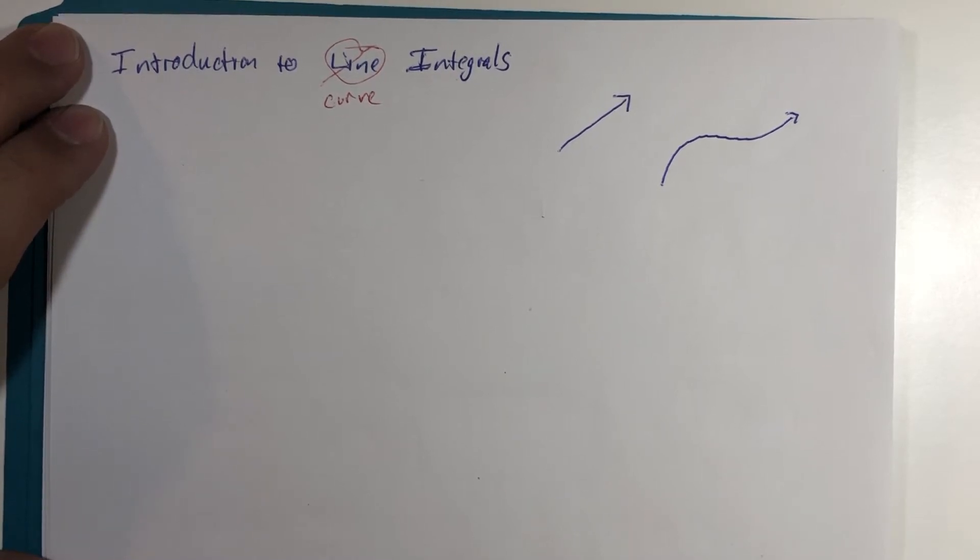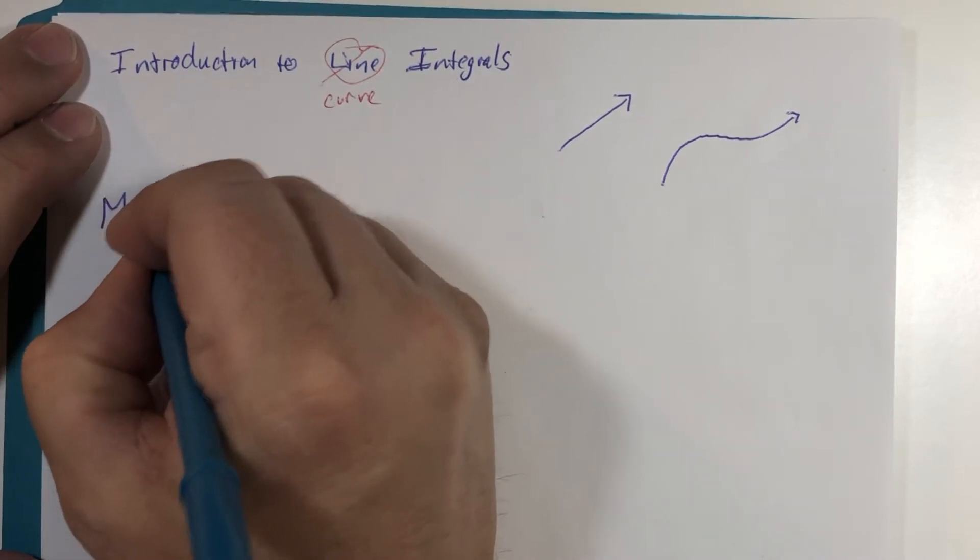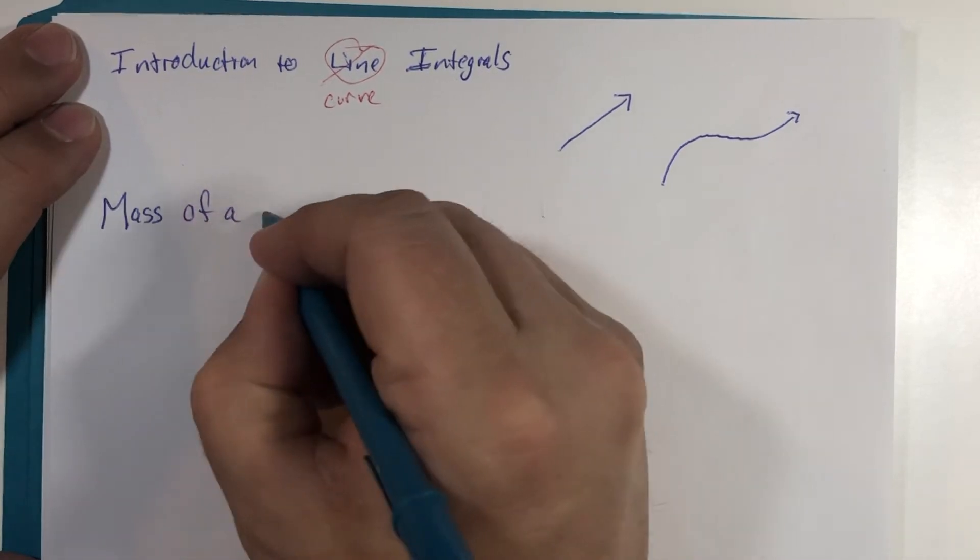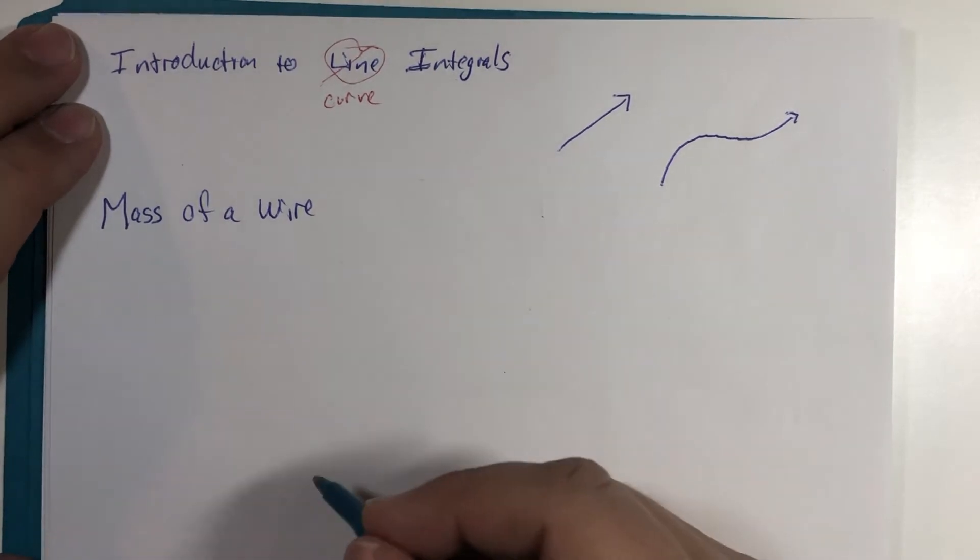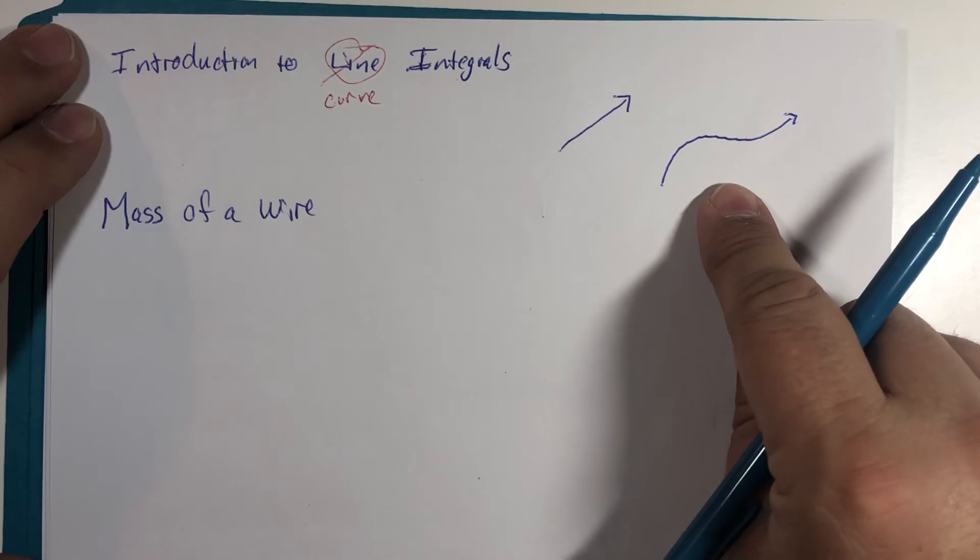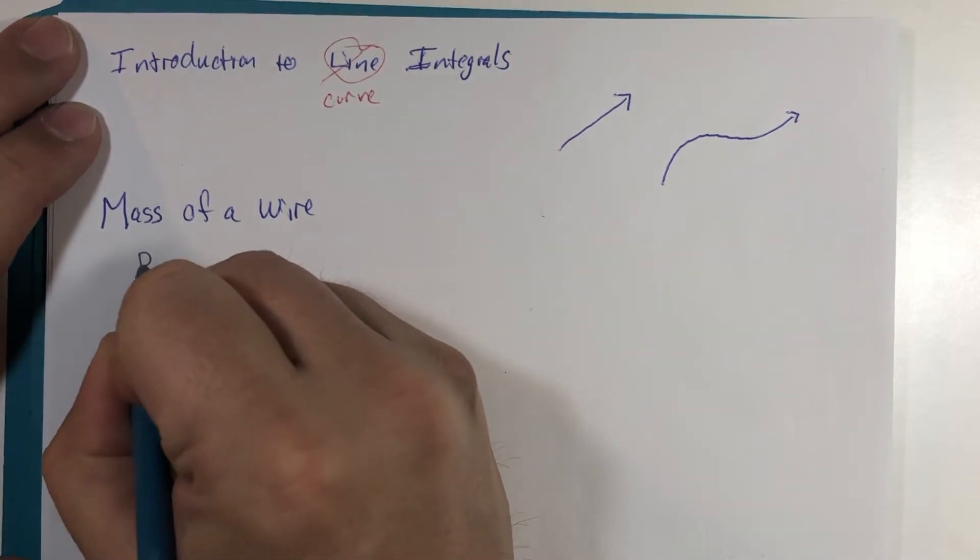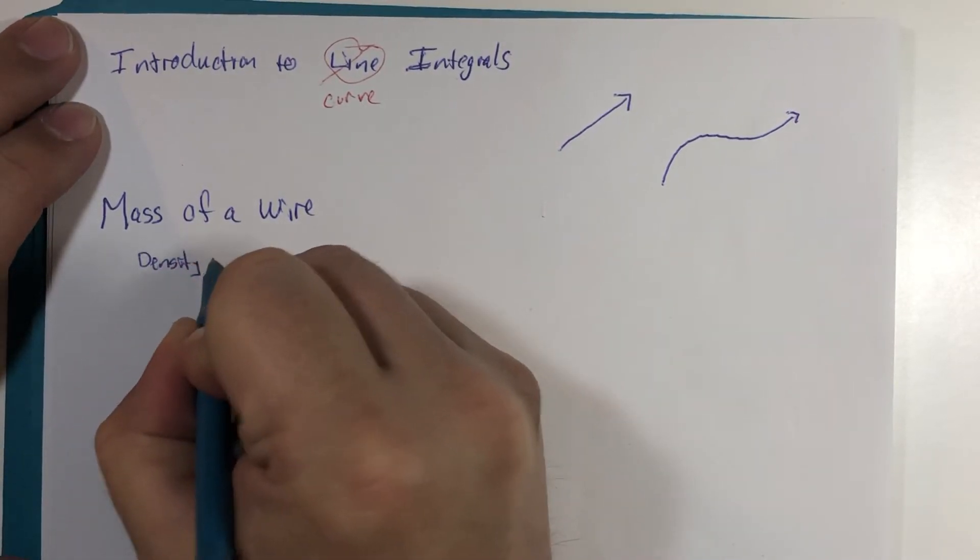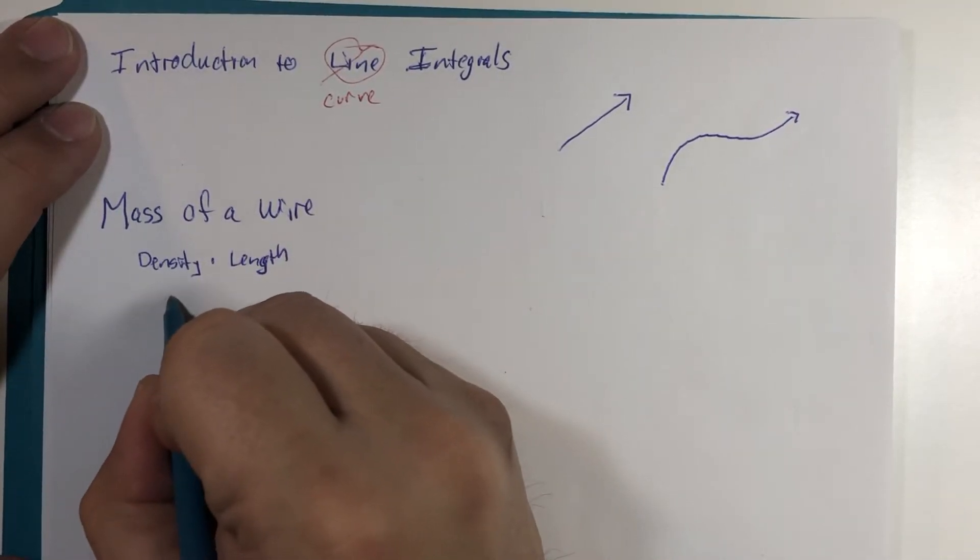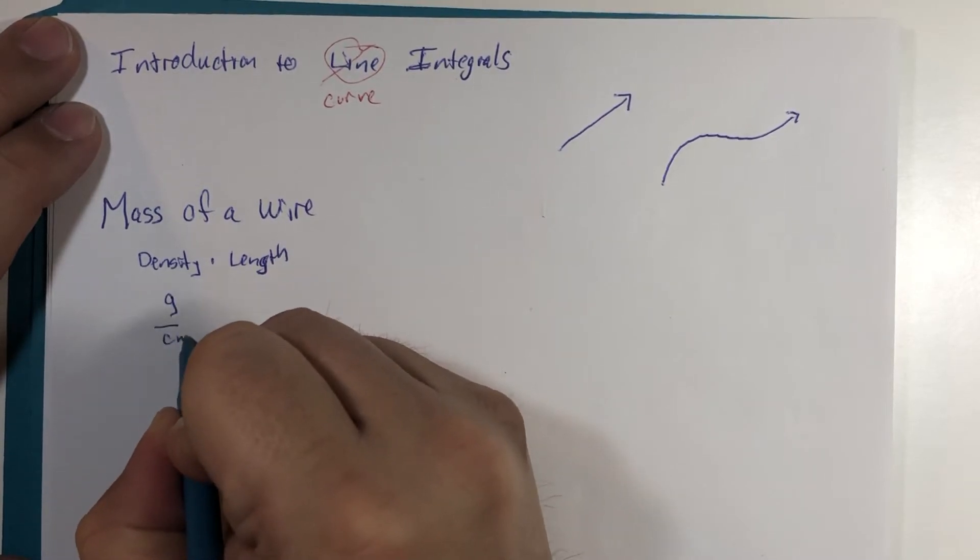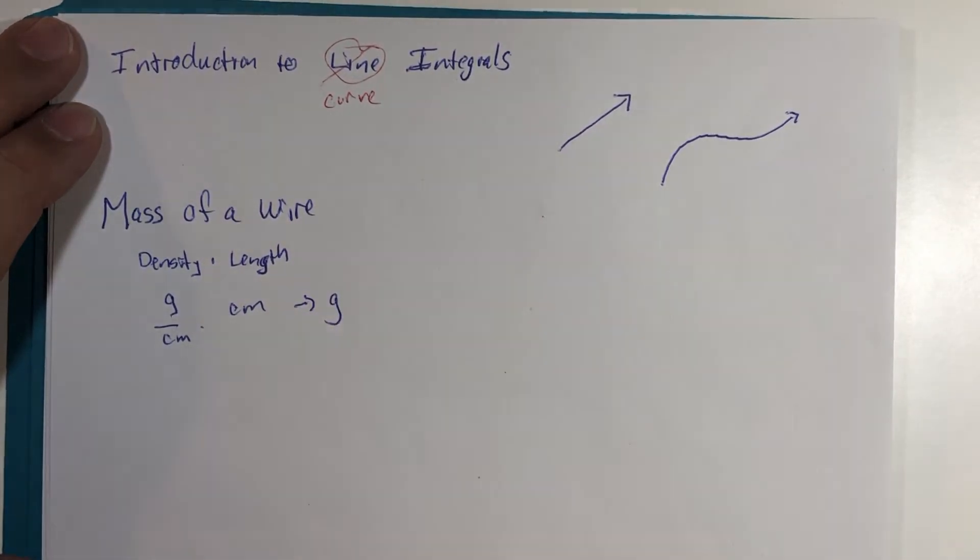The problem we're going to look at is how to calculate the mass of a wire. Think of these two paths as wires. To find the mass I would need the density multiplied by the length. So the density might be, for example, grams per centimeter and the length might be measured in centimeters, and so we would have this equal to grams when we multiply it out - that would be mass.